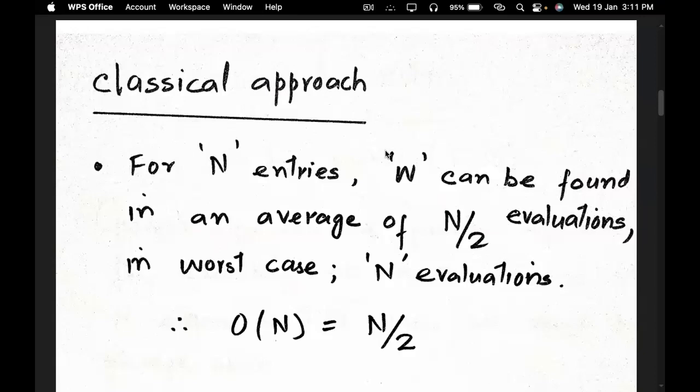For example, if N is very large — say 1 billion — it is very hard to perform that many evaluations. So we look for another technique by which we can reduce the number of evaluations. If N is 1000, it is very hard classically, so we will try to reduce the number of evaluations. And that is where Grover's algorithm comes to the rescue.